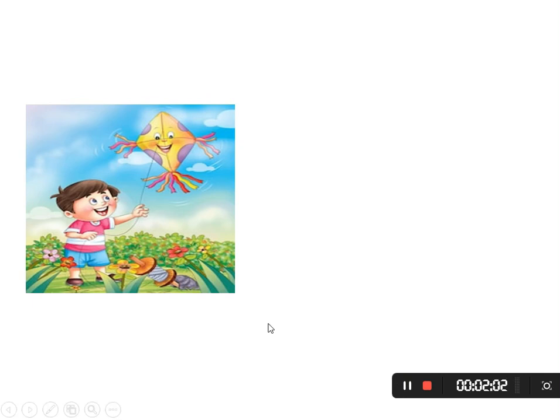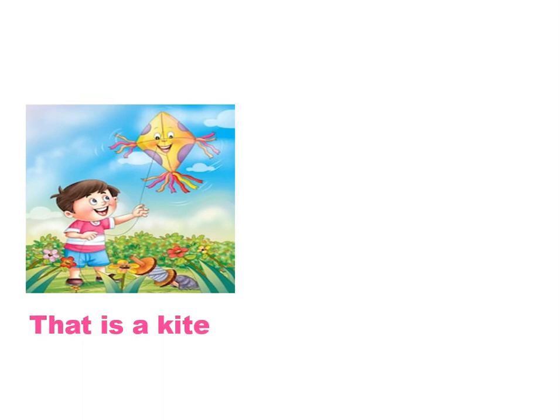For example, number one: 'That is a kite.' Is he near the kite? No, he isn't — الكائت بعيدة جدا، هو مش طايلها، ماسك بس الخط بتاعها. How many kites are there? One — ما فيش غيرها، واحدة. So the kite is far — بعيدة — and it's single. That's why we use 'that is'.